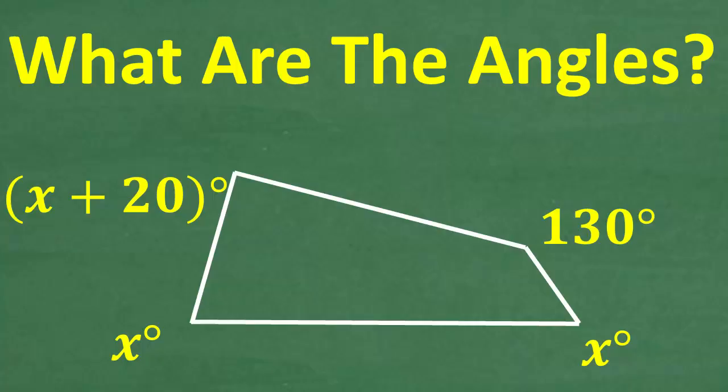The actual question is we have this angle here being x degrees, this angle right here being x degrees, this angle 130 degrees, and this angle right here is x plus 20 degrees. We want to find the actual angles in degrees.